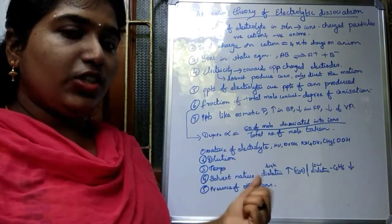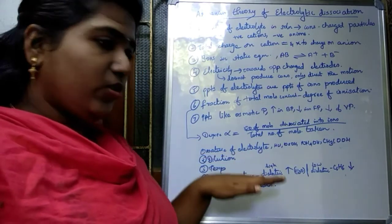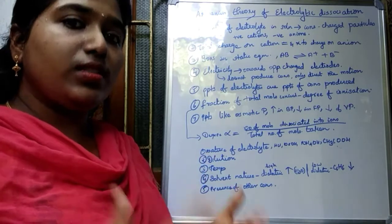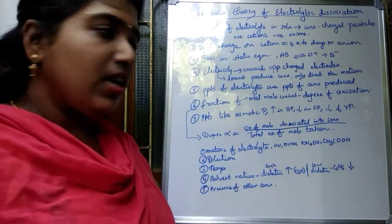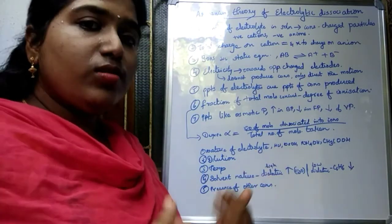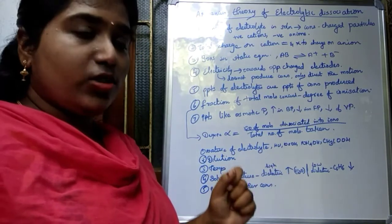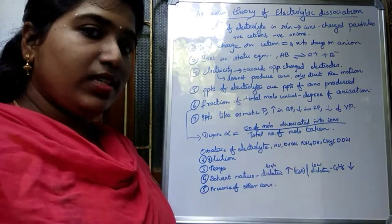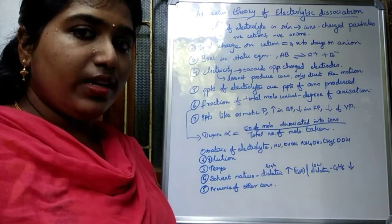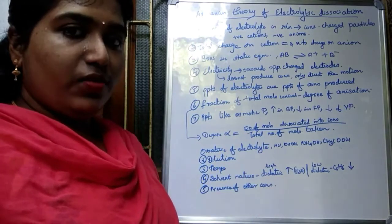The first factor affecting degree of dissociation is the nature of the electrolyte. If it is a strong electrolyte like HCl or NaOH, it dissociates very fast. For weak electrolytes like ammonium hydroxide and acetic acid, they dissociate slowly. So the nature of the electrolyte is one factor affecting the degree of dissociation.